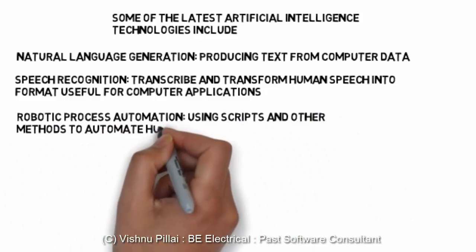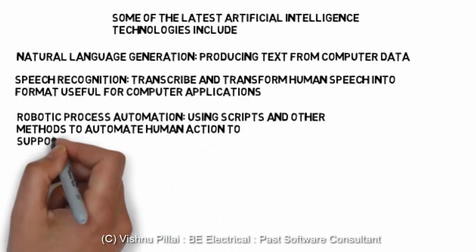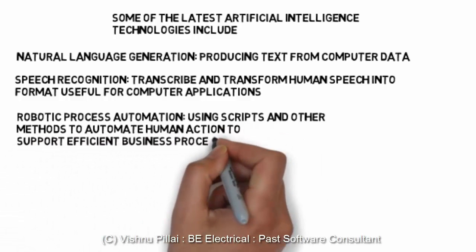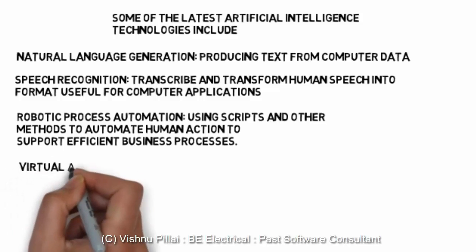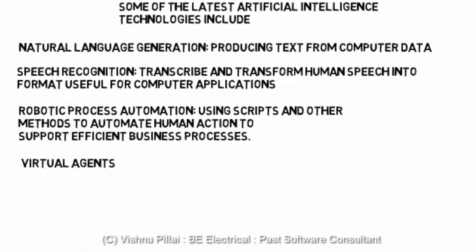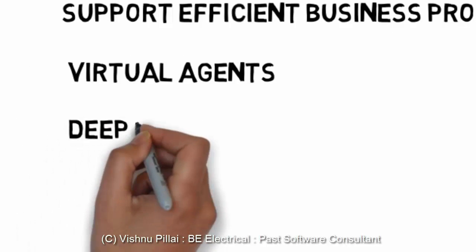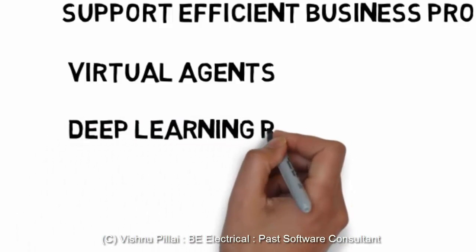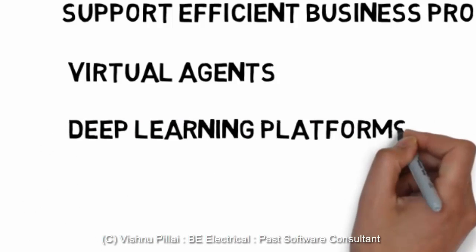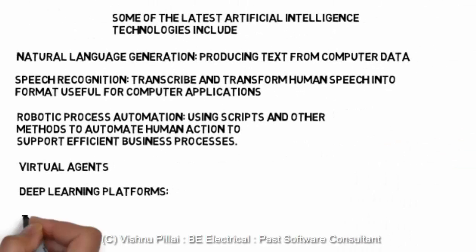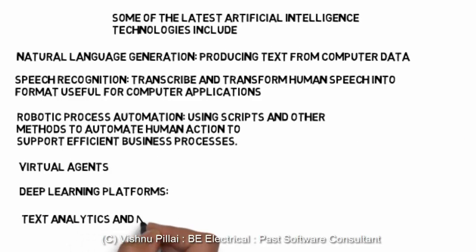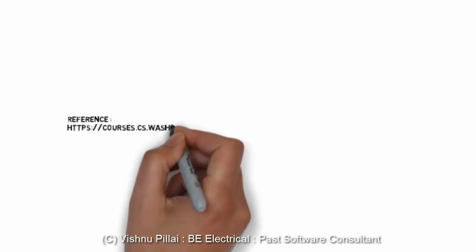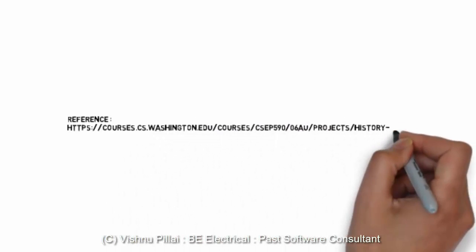These processes include automation using scripts and other methods to automate human actions to support efficient business processes. AI has also enabled the production of virtual agents — chatbots and other customer communication platforms — which is one of the areas where much development is currently happening.